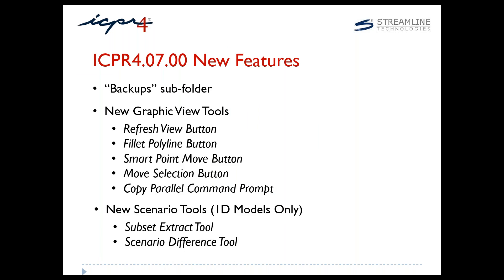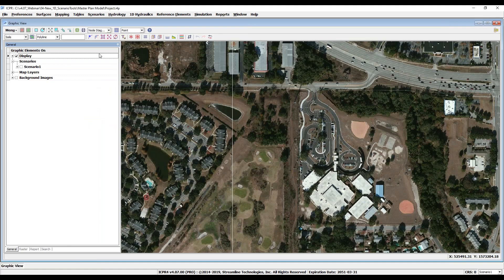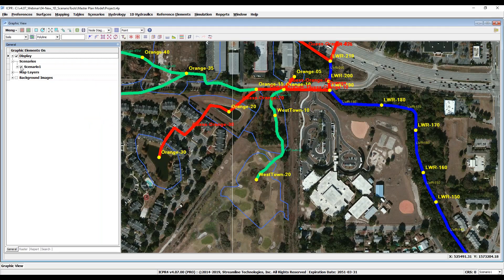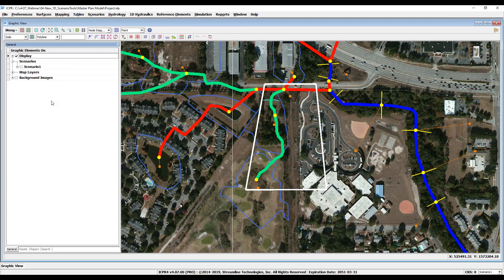We are excited to introduce two new scenario tools for 1D models with this new release: the subset extraction tool and the difference tool. Starting with the subset extraction tool, this tool allows ICPR-4 users to create a smaller 1D model from a larger 1D model. This is particularly useful for those managing multiple large-scale watershed models with thousands of nodes and links. We'll begin with our existing conditions watershed model turned on in graphic view, referred to as the parent scenario.